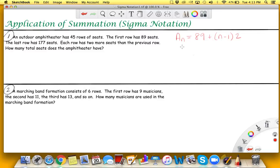If we take our summation, we start with n equals one because we're going to start on the first row, and then we go all the way to the 45th row. Here in parentheses we're going to have 89 plus n minus one times two.